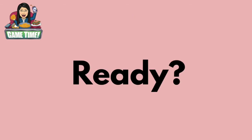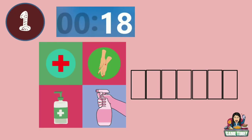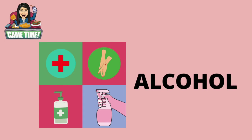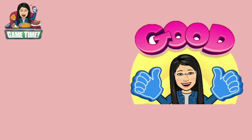Ready? You have 20 seconds to guess the first picture. Timer starts now. 10, 9, 8, 7, 6, 5, 4, 3, 2, 1. Time's up. What's this? You're right! It's an obstacle! Good!